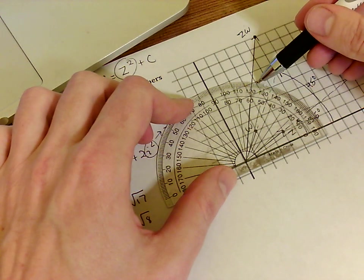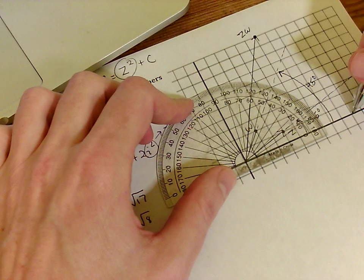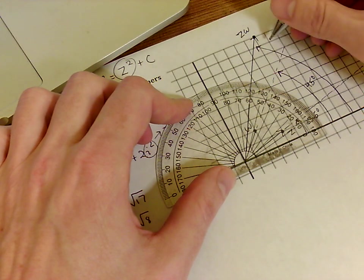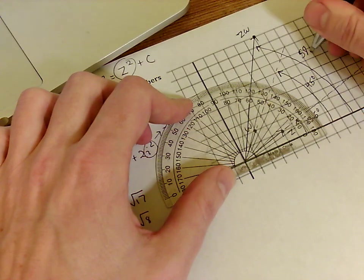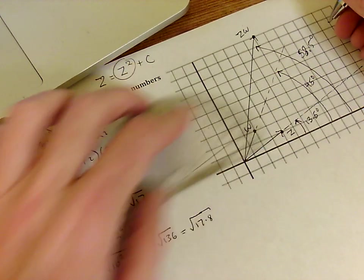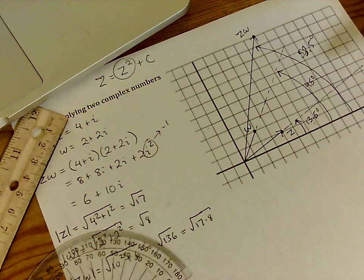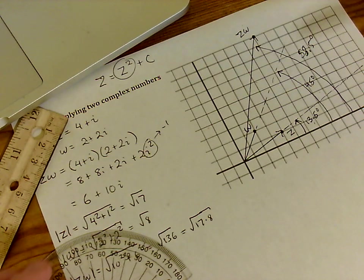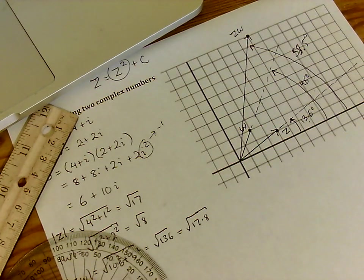And can you guess what the angle of zw is going to look like? Well, that looks like, believe it or not, 58 and a half degrees. Which is, lo and behold, the sum of the two angles made by z and w. So, very amazing fact that we've just discovered here.